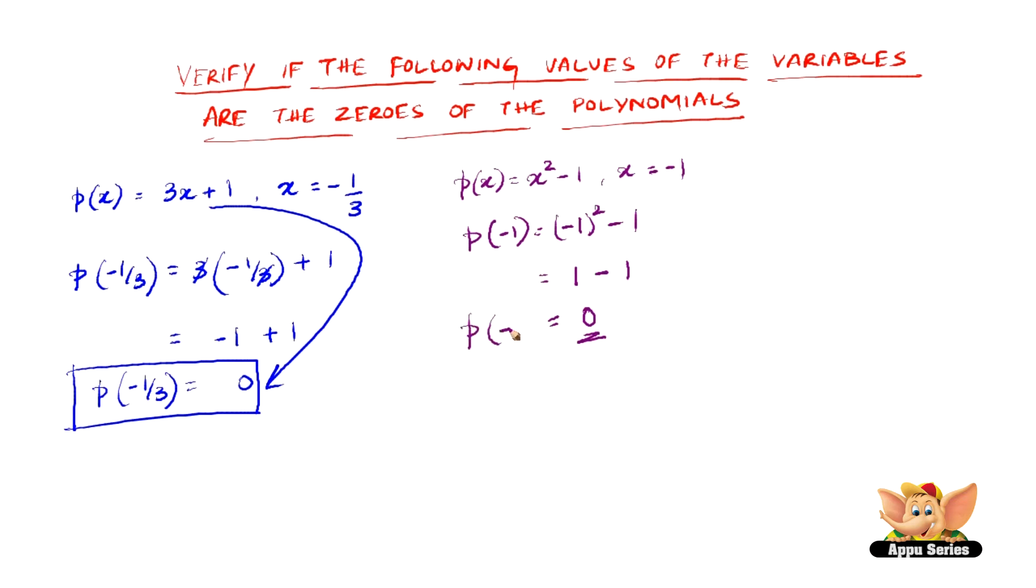Therefore, p of minus 1 is 0. So minus 1 is a zero of x squared minus 1.